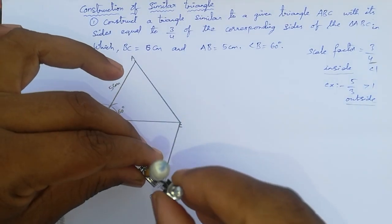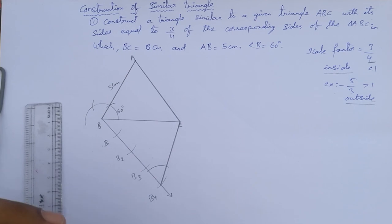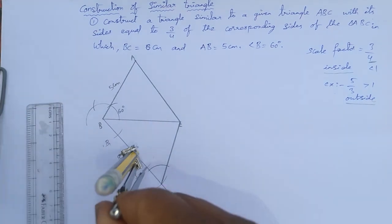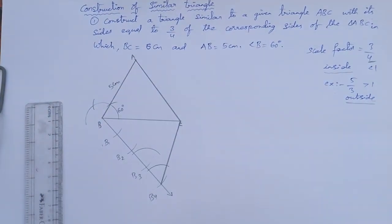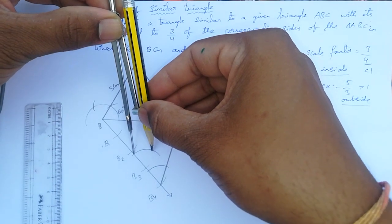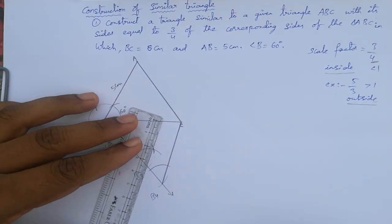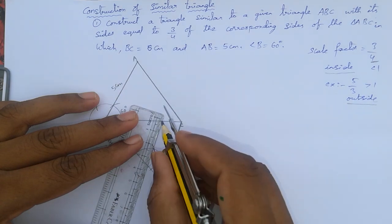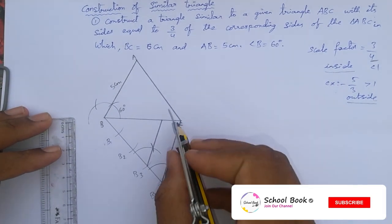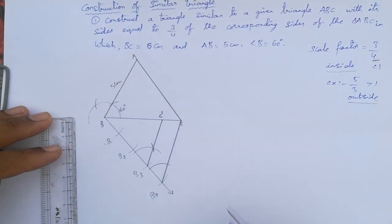Place on B4, draw an arc of 1.5 cm at B4, then from B3 draw the same arc without disturbing. Measure the chord length and mark it from the arc at B3 to get the intersection point. Join B3 to this intersection and extend to meet BC line — this gives the parallel line. Mark this intersection as C dash.